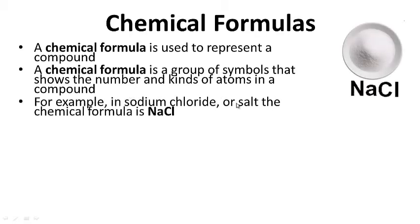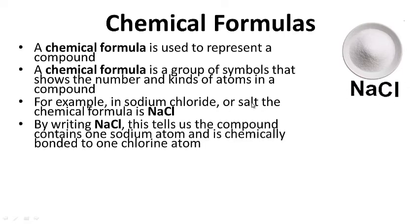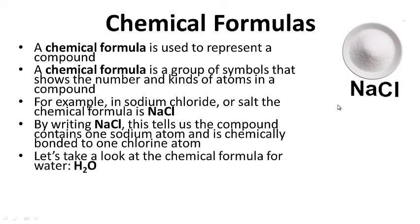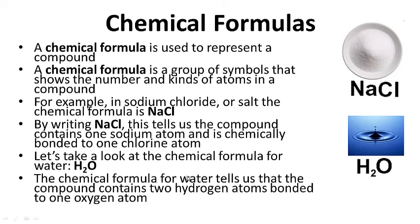For example, sodium chloride — writing NaCl tells us that the compound contains one sodium atom bonded to one chlorine atom. For water, H2O, the chemical formula tells us the compound contains two hydrogen atoms and one oxygen atom. So the chemical formula tells us how many atoms are present in the compound or chemical.